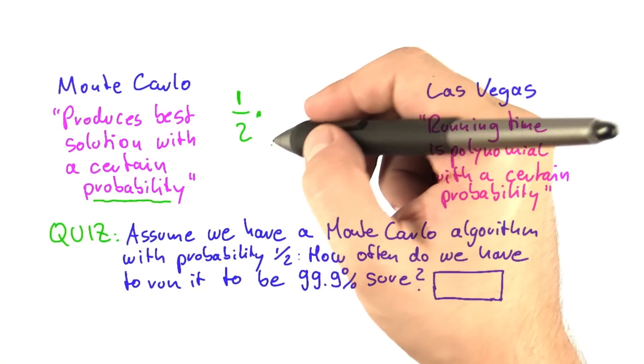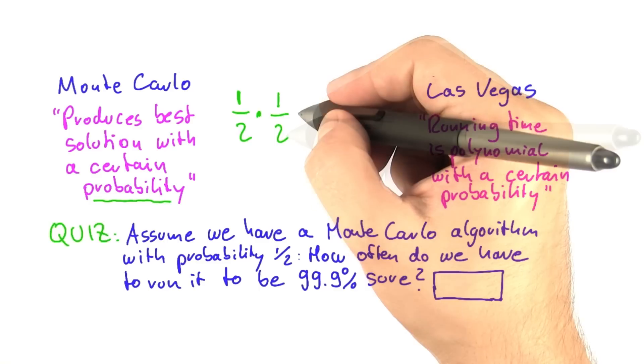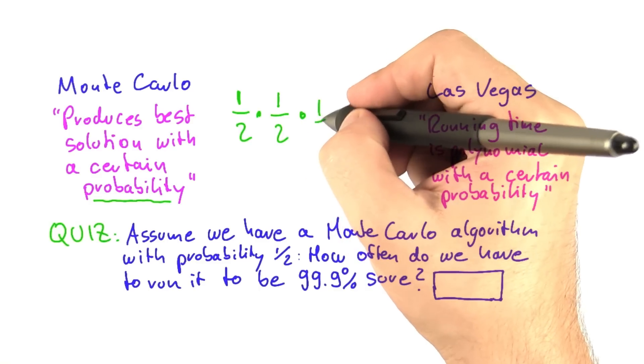Then we run it again. So the probability in the second run is again 1 half that we do not get the best possible answer. And in the third run, it's again 1 half, and so on.